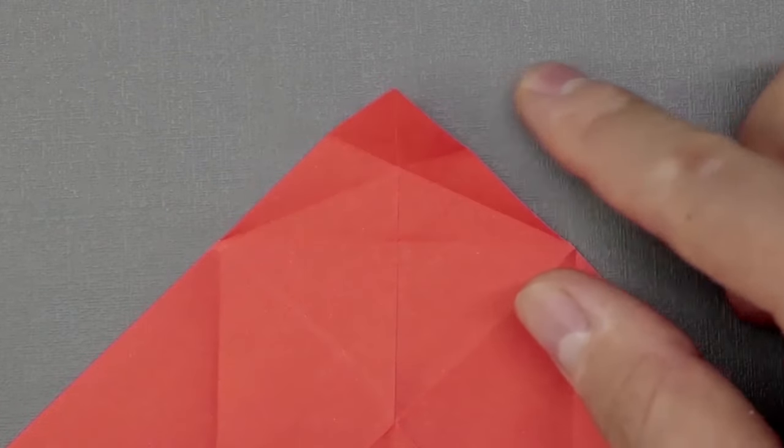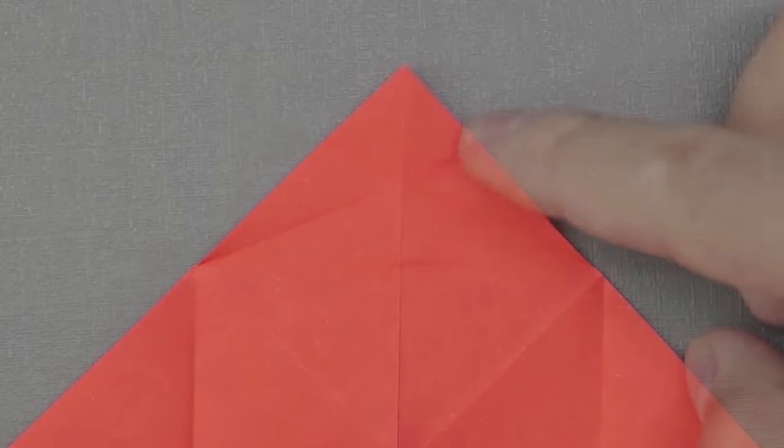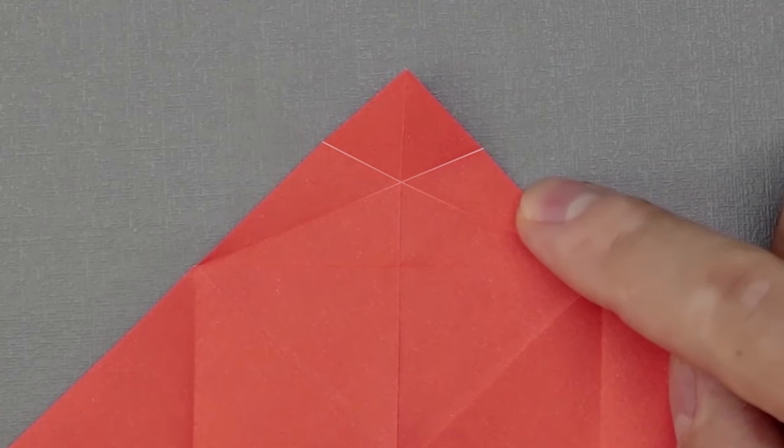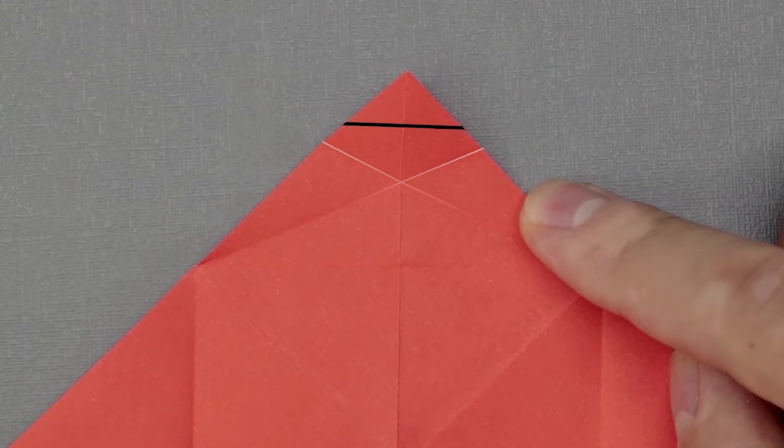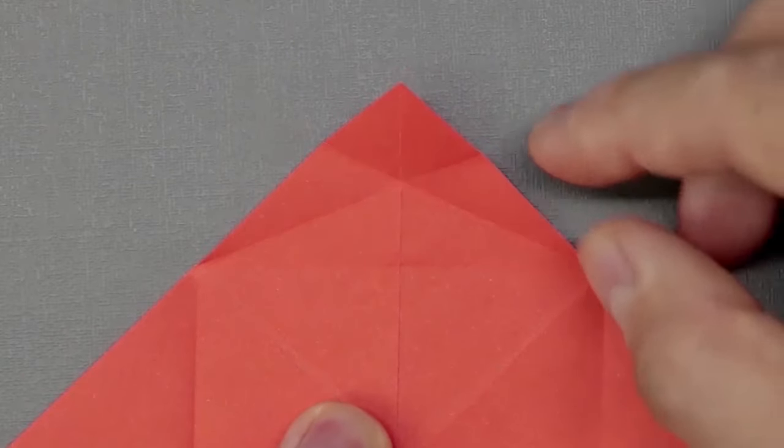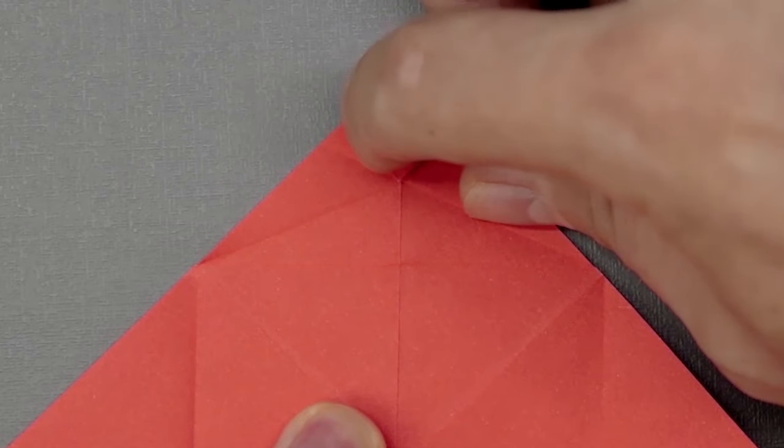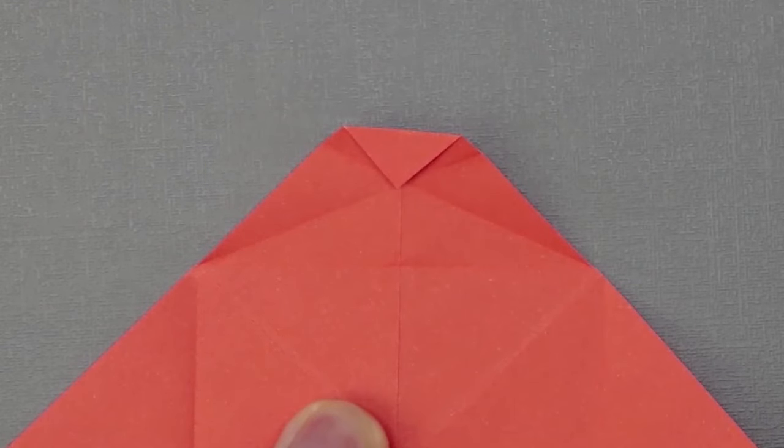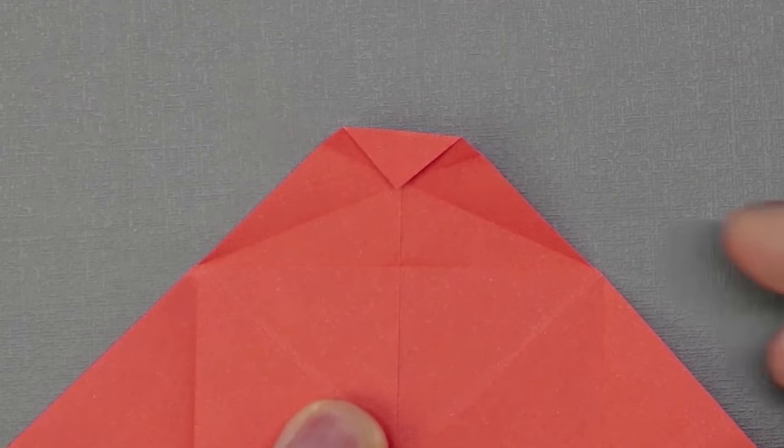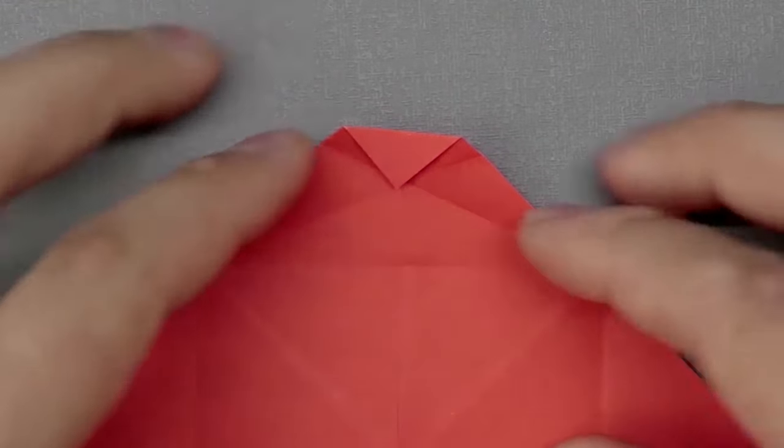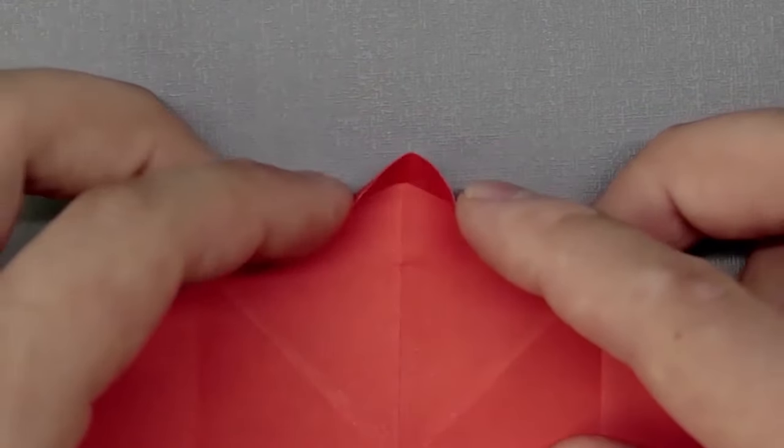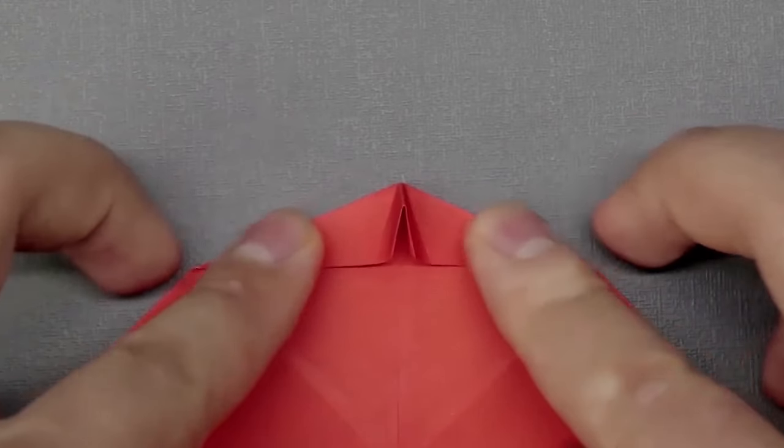Just above these lines, we have a small space. Let's divide the same space in the middle. You just have to bring the corner to this point where the lines cross. Now, using the two previous lines, let's bring both sides down at the same time, thus creating a small flap.